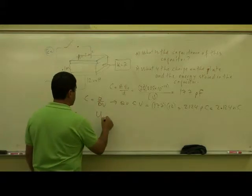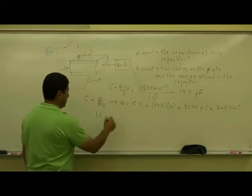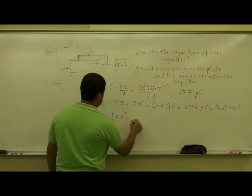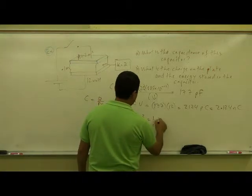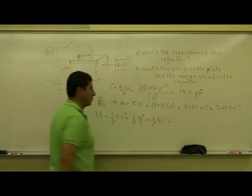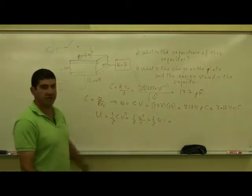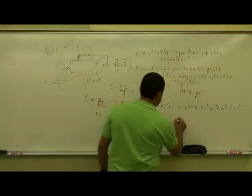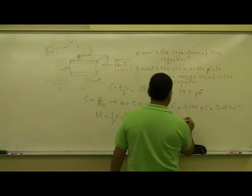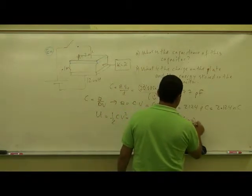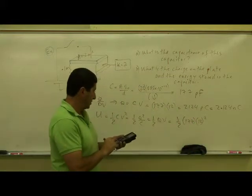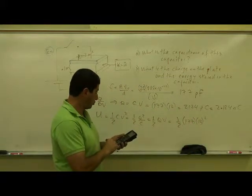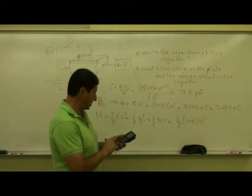Then the potential energy of the capacitor, I can either do half CV squared or half Q squared over C or half QV. Either one. So let's say I decide to do half CV squared. So half times the capacitance times voltage squared. So you're going to have 0.5 times 177 times 144.